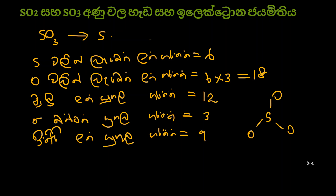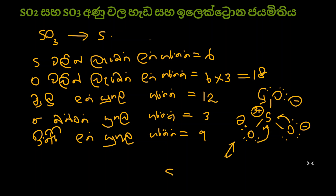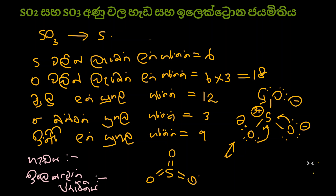From those three sigma bonds, the remaining lone electron pairs are placed on the outer atoms — not on the central atom — so that each oxygen achieves a complete octet. All three oxygens have lone pairs on the outside. For sulfur, looking at the structure, three double bonds are formed between sulfur and oxygen.